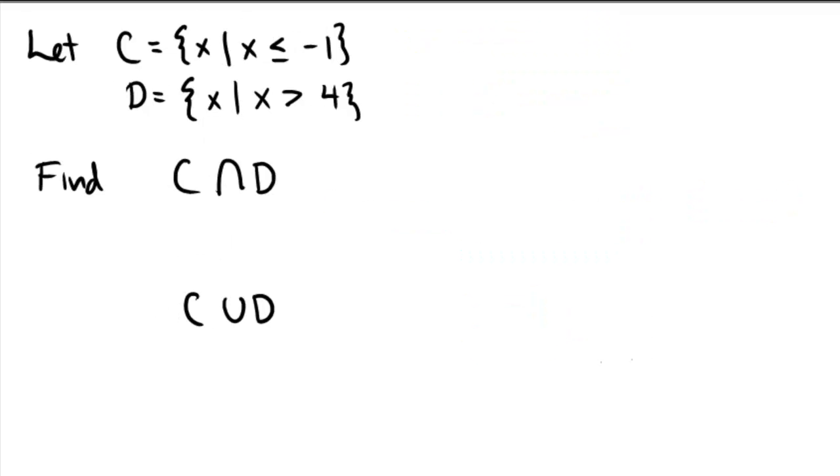Okay, a little bit more quickly, let's look at C and D here. So C, the interval that is supposed to be less than or equal to negative 1. So here's negative 1, solid dot, and left.